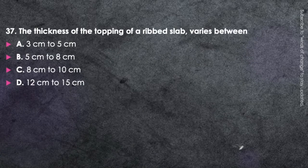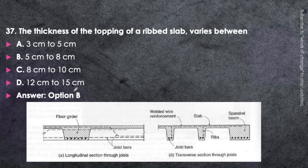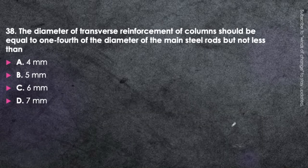Next question: The thickness of the topping of a ribbed slab varies between 5 cm to 8 cm — option B is correct. Since ribbed slabs are meant for lighter construction, the topping slab thickness is a lower value. This slab thickness of 5 cm to 8 cm refers to the topping portion of the ribbed slab.